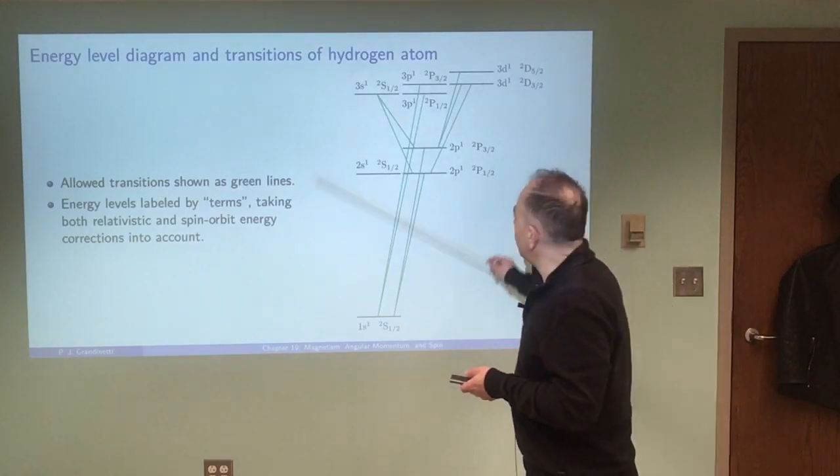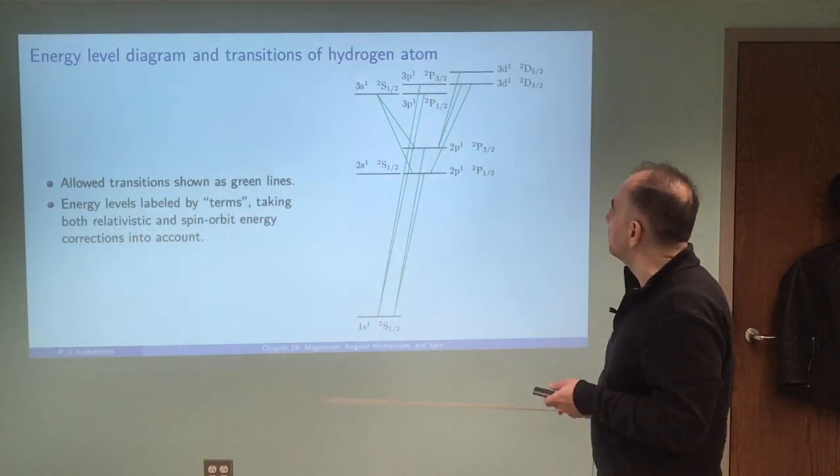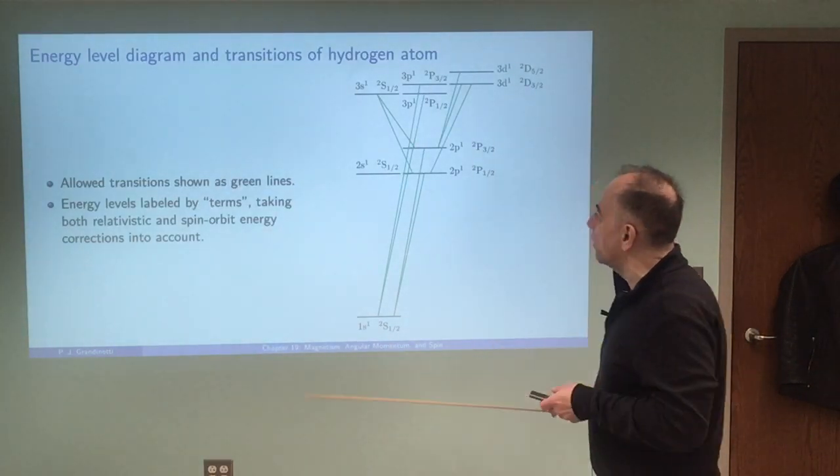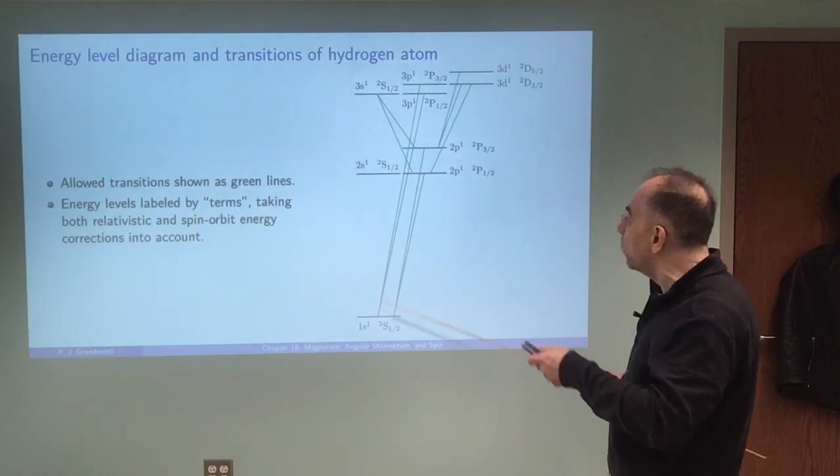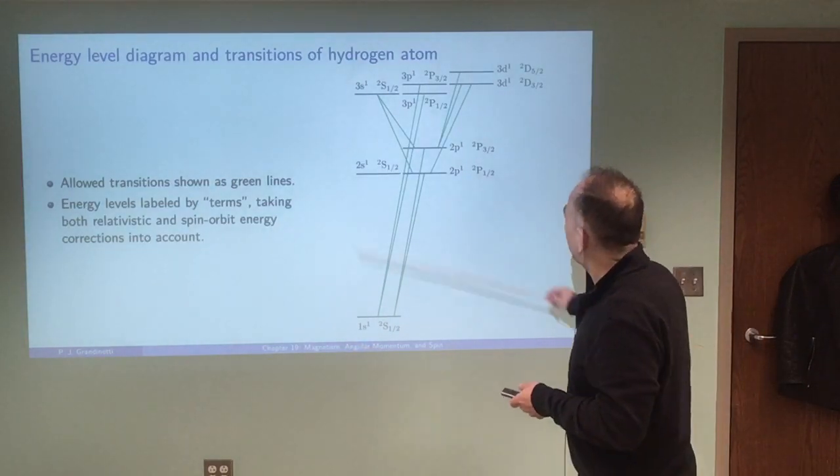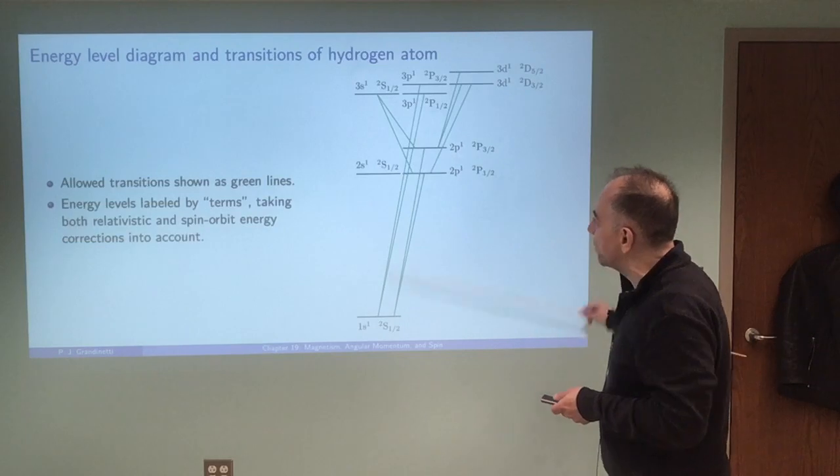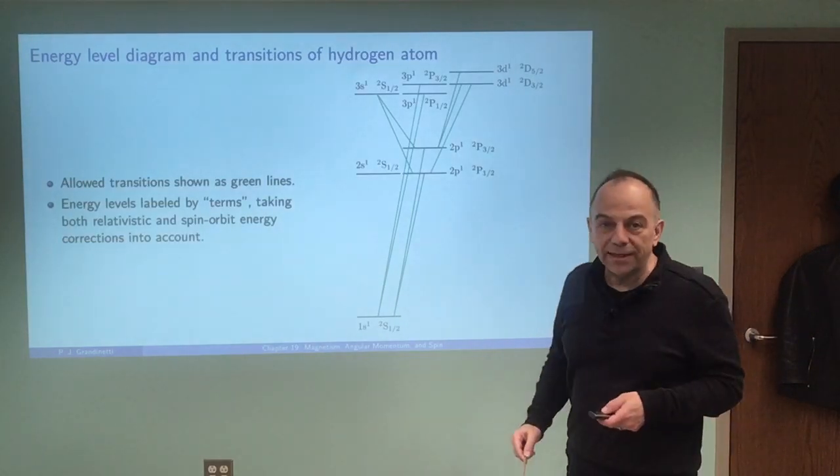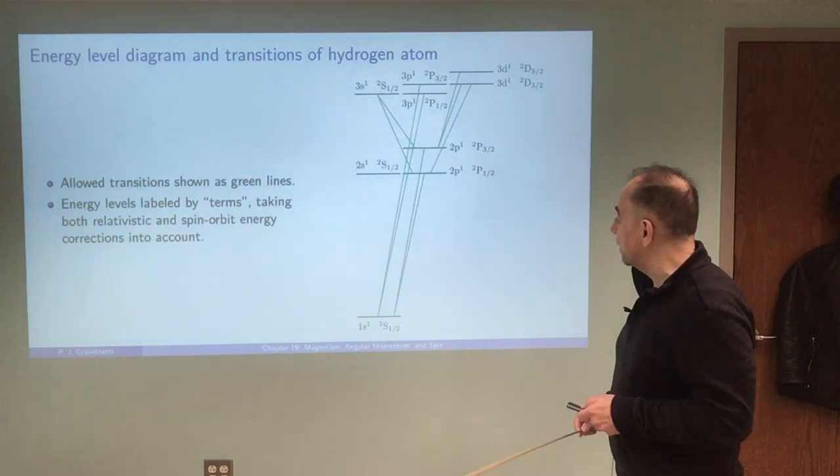If we drew an energy level diagram taking all of those corrections into account and more then you would get a diagram like this and these green lines would represent the transitions that would be allowed based on those selection rules.